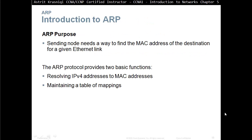Introduction to ARP — ARP purpose. A sending node needs a way to find out the MAC address of the destination for a given Ethernet link. The ARP protocol provides two basic functions: resolving an IP address to a MAC address, and maintaining a table of mappings.